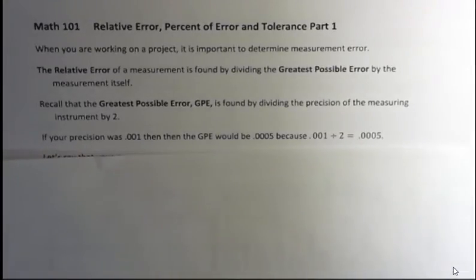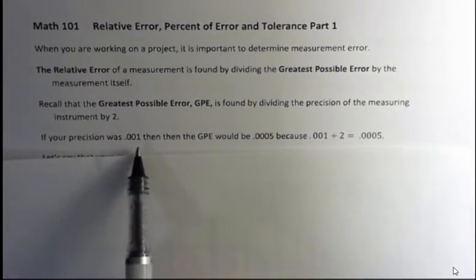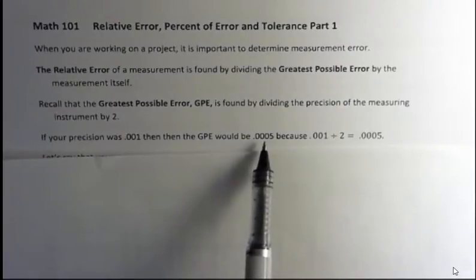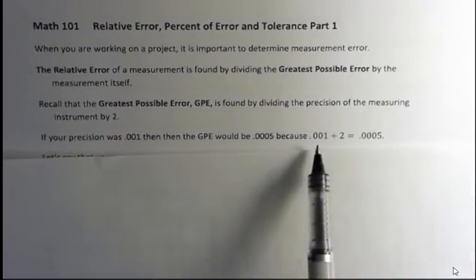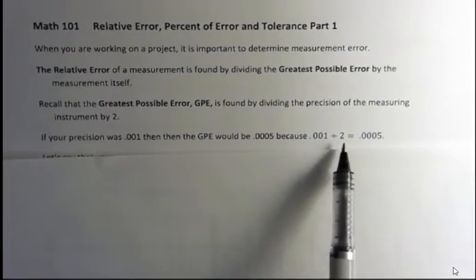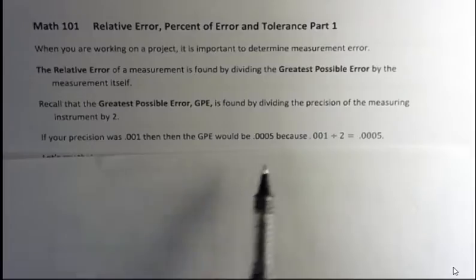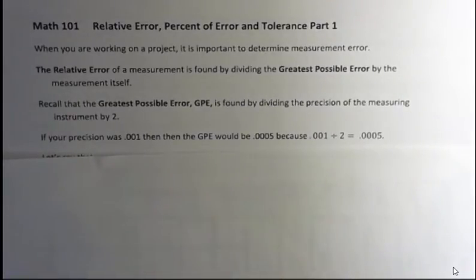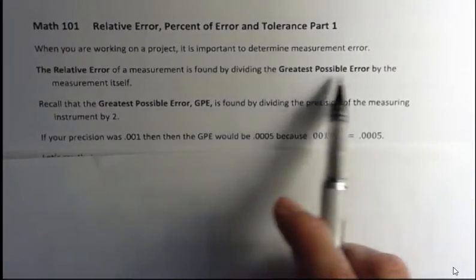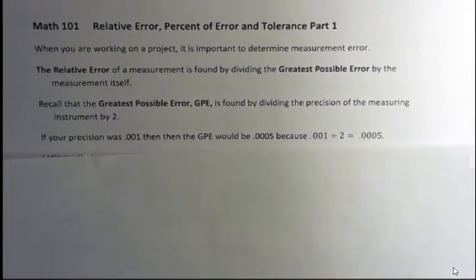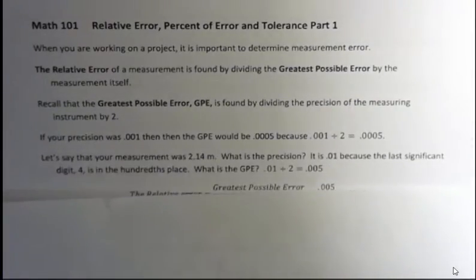So if your precision was 0.001, then the greatest possible error would be 0.0005, because 0.001 divided by two is 0.0005. We just take whatever the precision is, divide by two, and that gives us our greatest possible error. Then we're going to take the greatest possible error and divide that by the measurement itself, and that's going to give us our relative error.